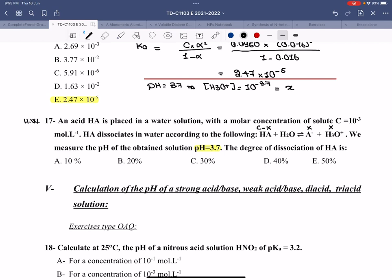If I have the pH equals 3.7, I automatically know that H3O plus is equal to 10 to the negative 3.7, and this is basically your X. I also have the initial concentration, 10 to the negative 3. All I have to do is say that alpha is equal to X, 10 to the negative 3.7, divided by 10 to the negative 3. So it is basically 10 to the negative 0.7. So alpha is equal to approximately 20%.